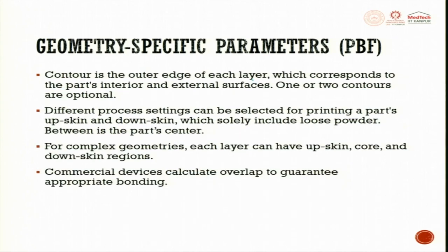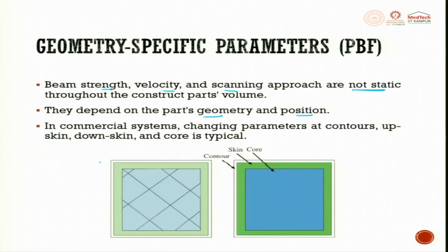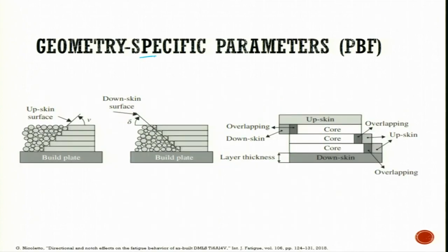Commercial systems change parameters at contour, up-skin, and down-skin. The contour is the outer edge of the layer corresponding to the part interior and exterior surface. For complex geometries, each layer can have up-skin, core, and down-skin regions. The up-skin is the top surface, down-skin is the bottom surface, and the core is changed layer by layer as the part is built.